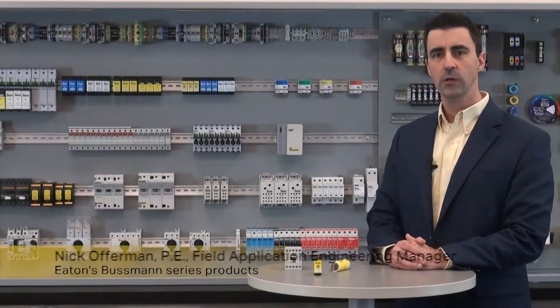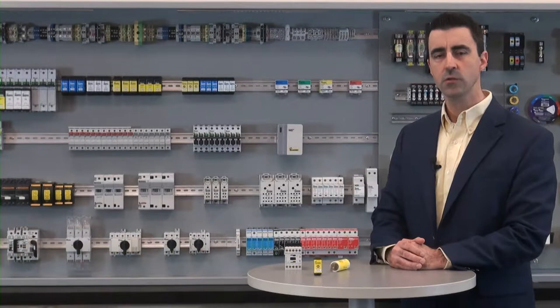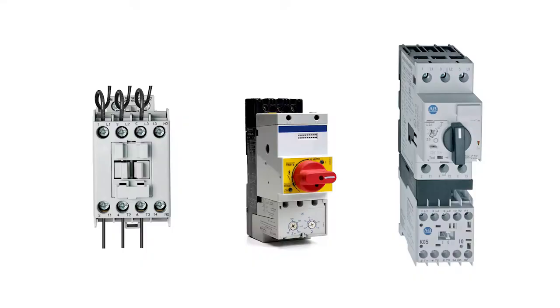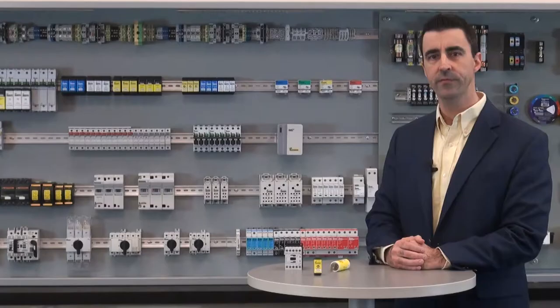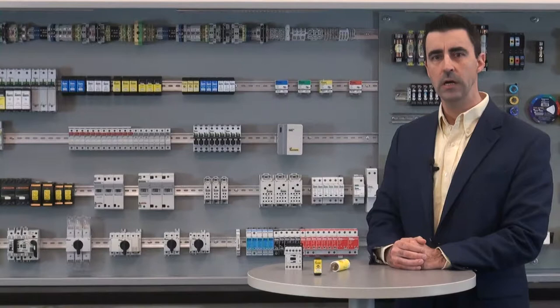Current limitation plays a major role when protecting components and achieving a high short circuit current rating. Electrical components such as contactors or motor starters have a standard fault rating or default short circuit rating and sometimes a higher rating called a high fault rating. This high fault rating requires a specific class of fuse and max amp rating to achieve the higher level of protection.